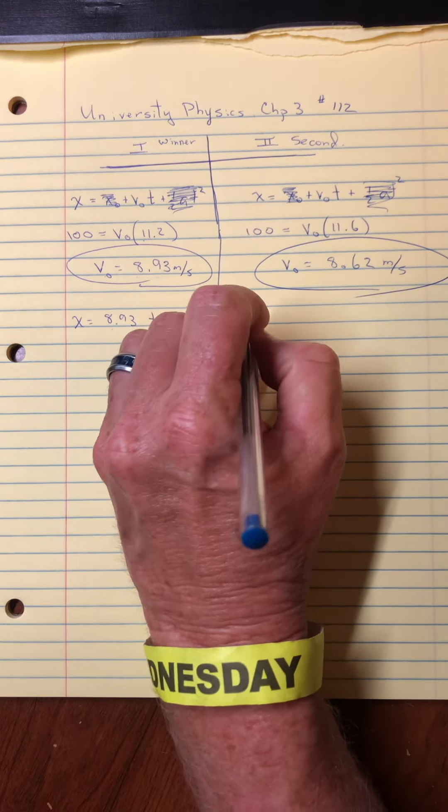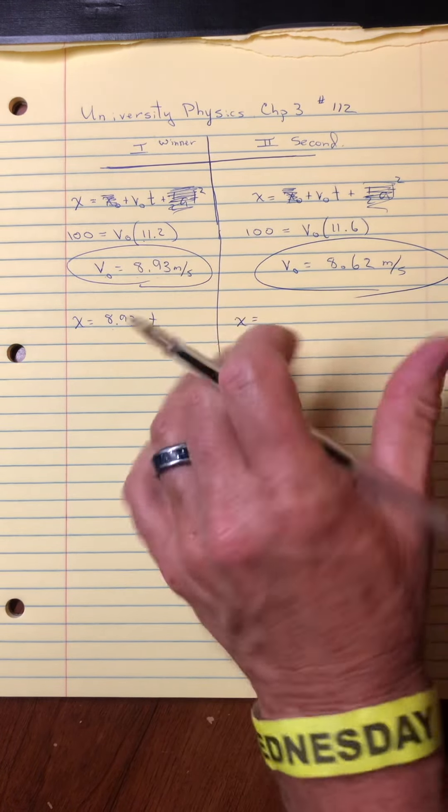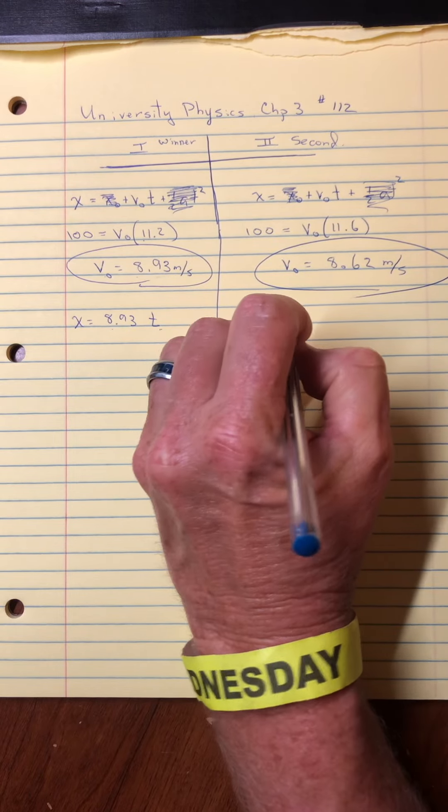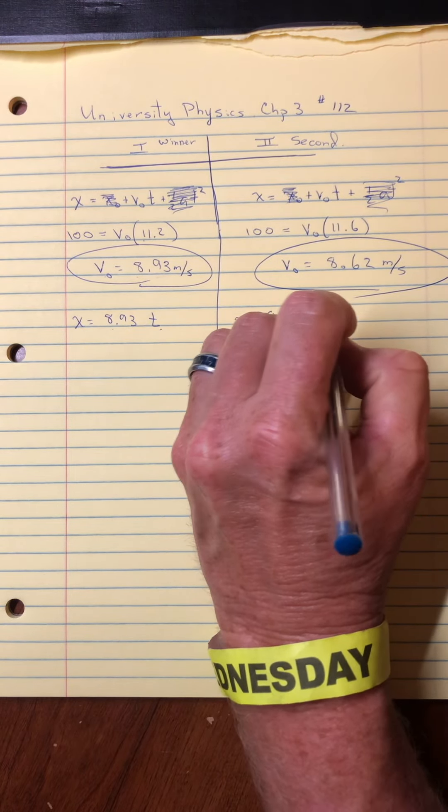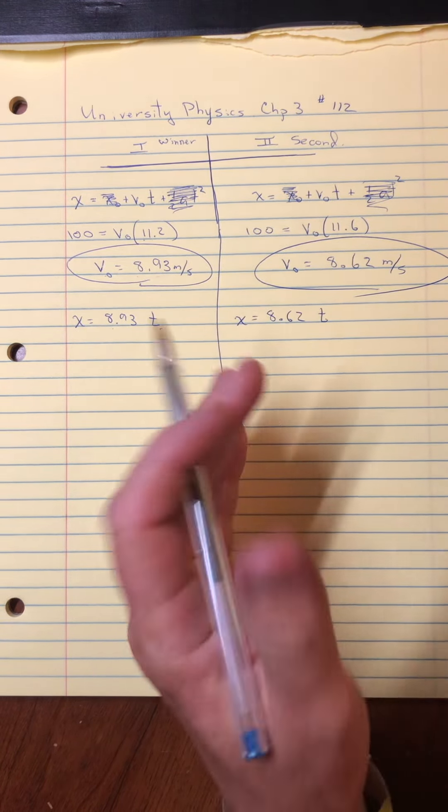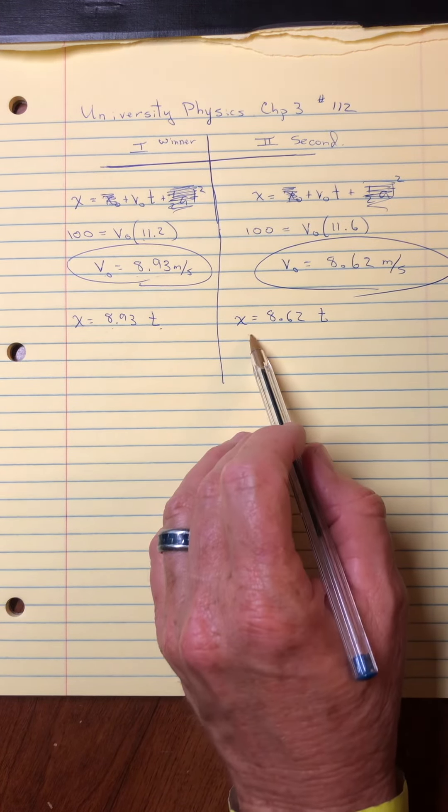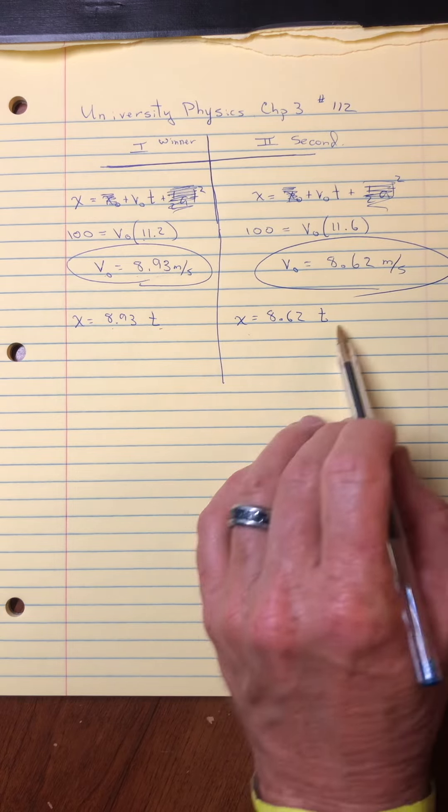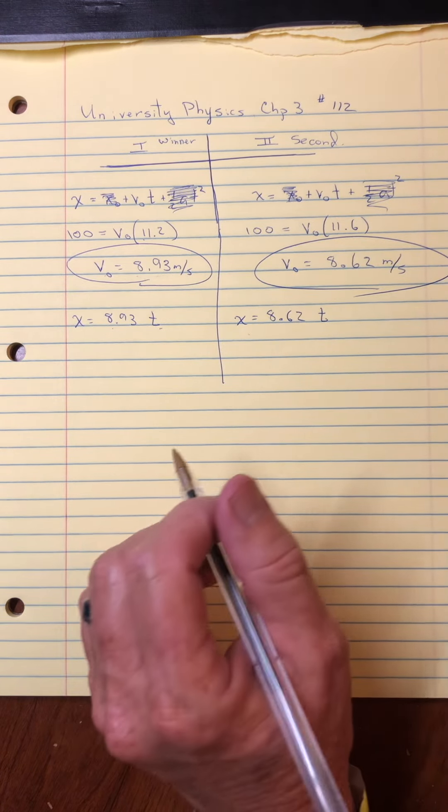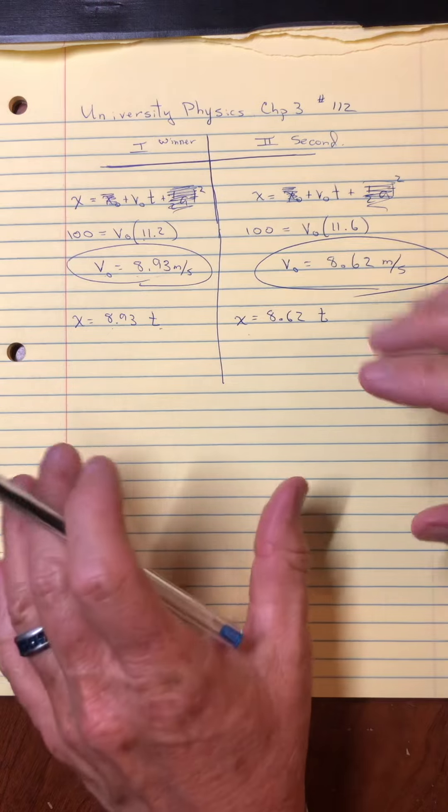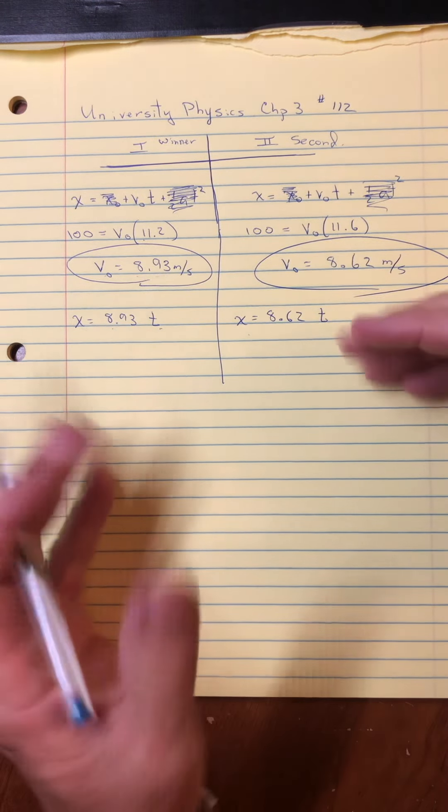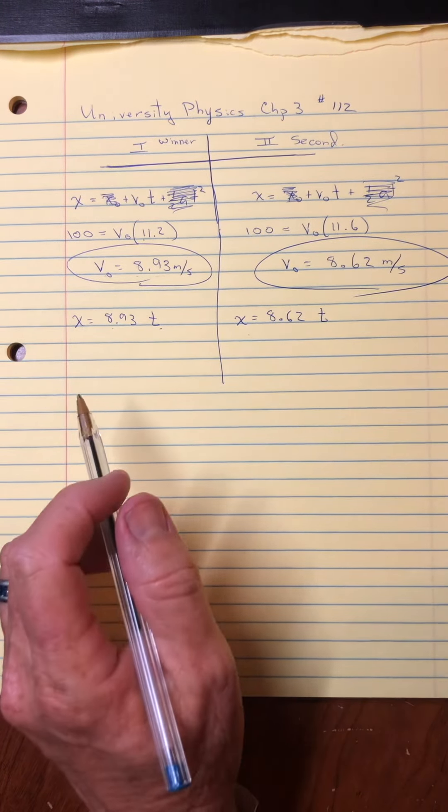Over here, if I were to write the equation for the position of the second runner, it's the same logic, 8.62 multiplied by the time. And again, I can put any moment in time. I could put in one second and say, where's the position of the runner after one second or two seconds or three seconds.